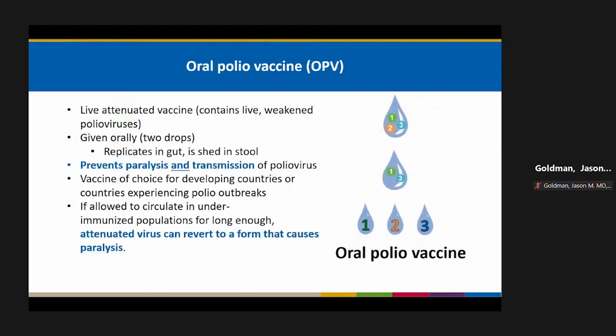Oral polio vaccine is a live attenuated vaccine containing a live weakened polio virus. It's given orally, replicates in the gut, and is shed in the stool. It prevents paralysis and transmission of polio virus and is the vaccine of choice in developing countries or those experiencing outbreaks. However, if allowed to circulate in under-immunized populations long enough, attenuated viruses can revert to a form that causes paralysis.